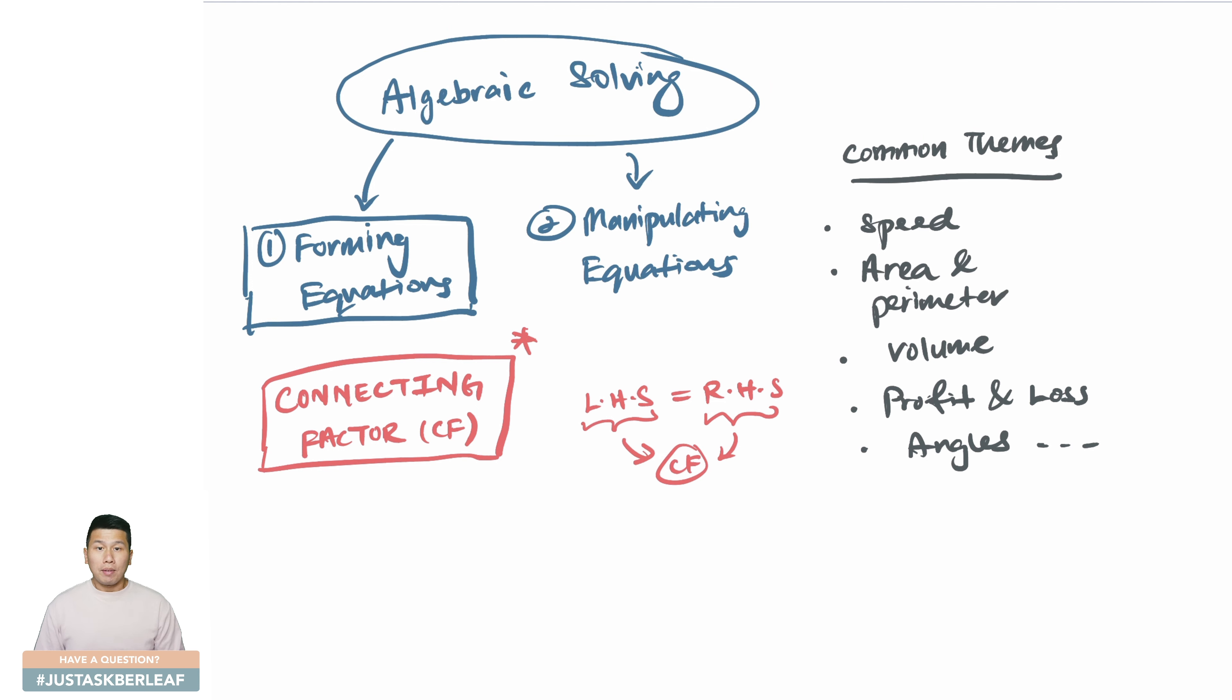So how do we go about finding it? I will share with you two of my top processes or methods in which you can engage in to identify the connecting factor and thereby form your equation. The first would be that of identifying key concept and also the formula involved. The second would be to follow the story and connect the dots.